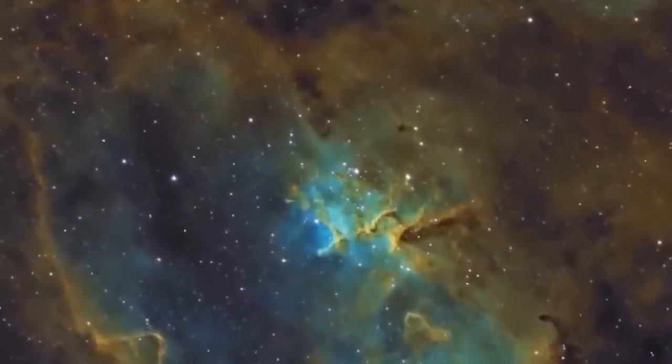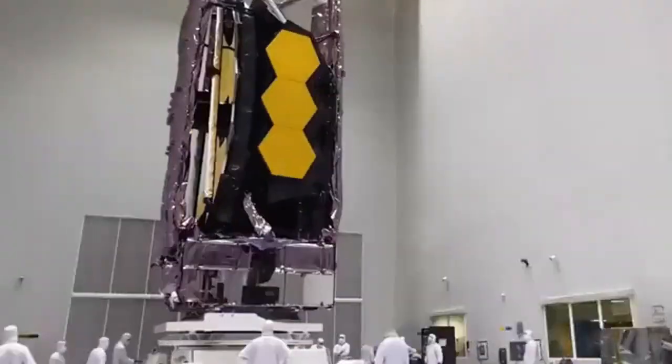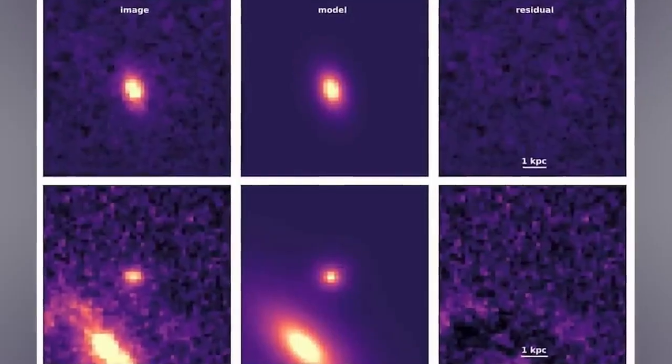Whereas Hubble has a primary mirror that's 2.4 meters across, Webb's segmented mirror spans 6.5 meters. This leads to a resolution that's 270% as sharp for the same wavelength light and light gathering power that's 730% as great as Hubble's.